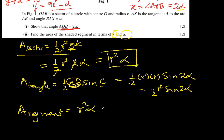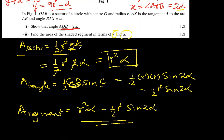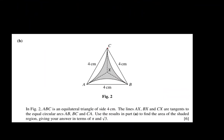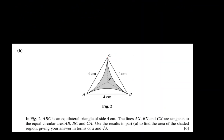We now have both parts, so we subtract to get the area of the segment: area of segment equals R squared alpha minus half R squared sin 2 alpha. This is the area in terms of R and alpha. Let's move on to part B. In Figure 2, ABC is an equilateral triangle of side 4 cm, and lines AX, BX, and CX are tangents to the arcs.